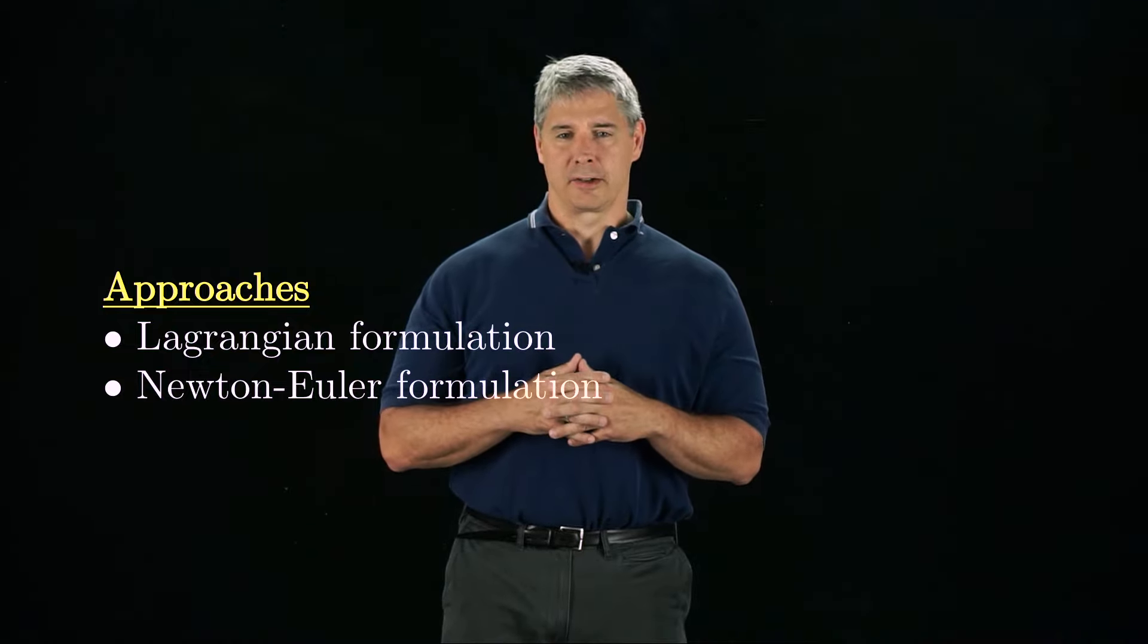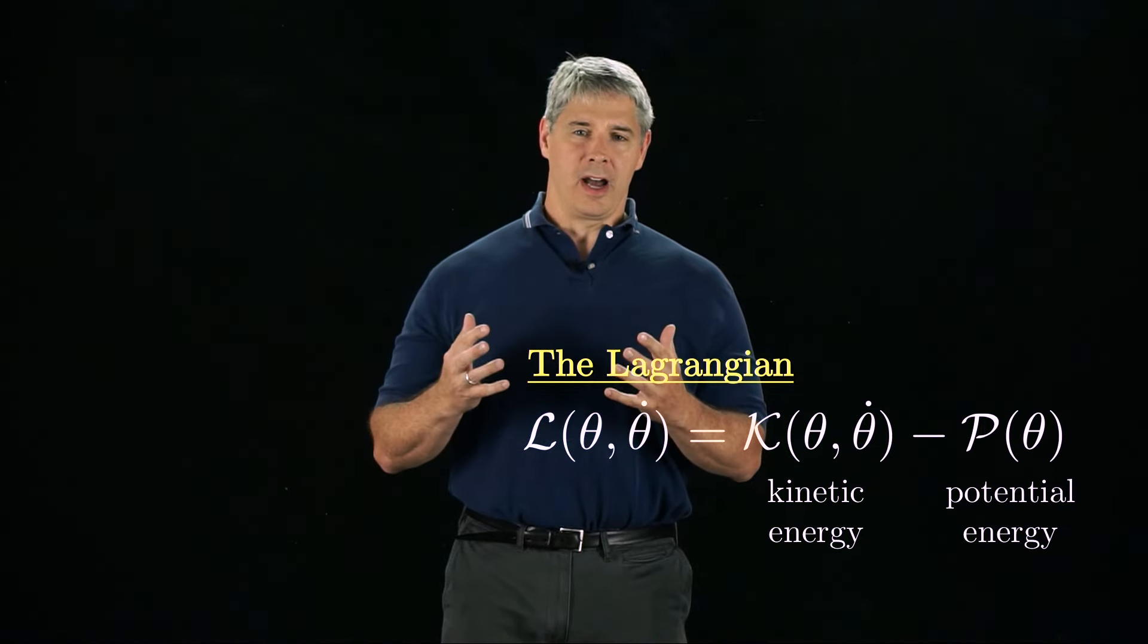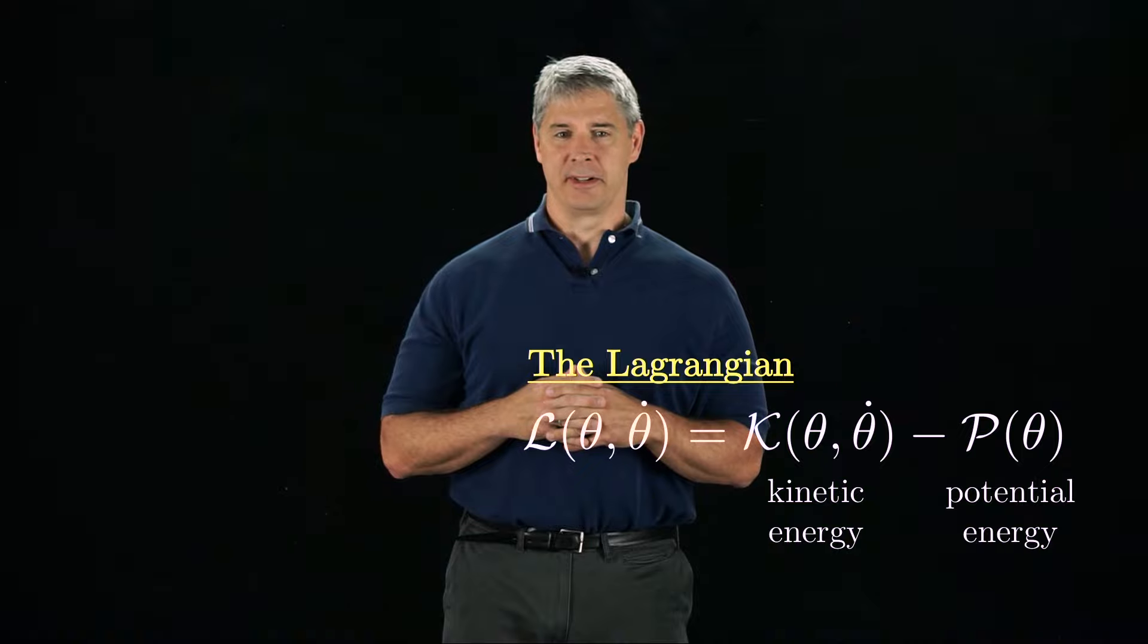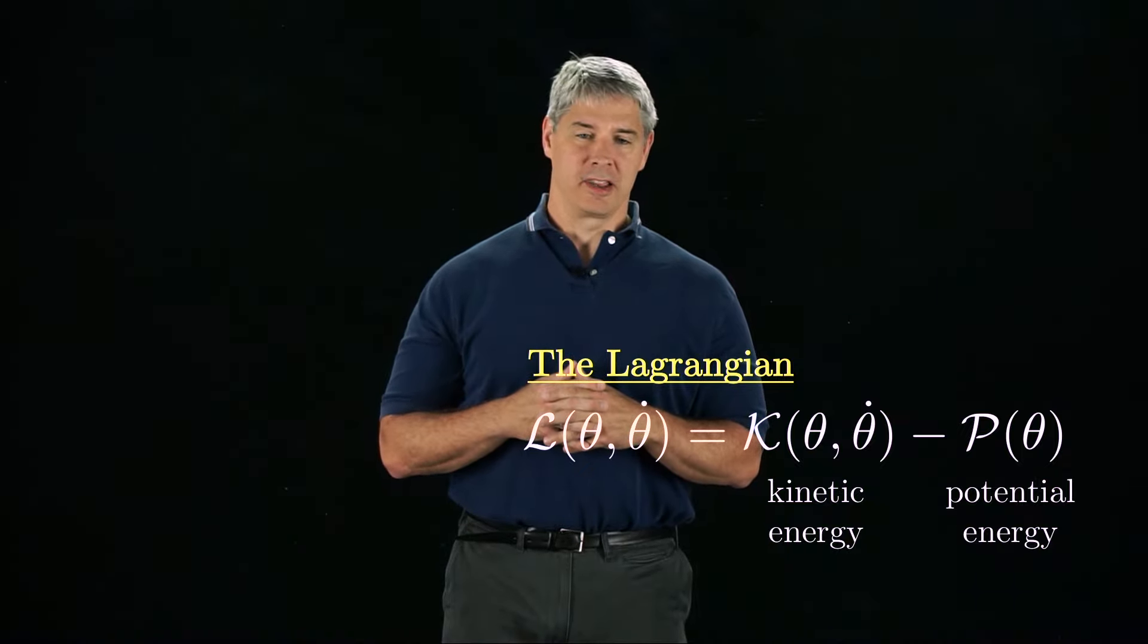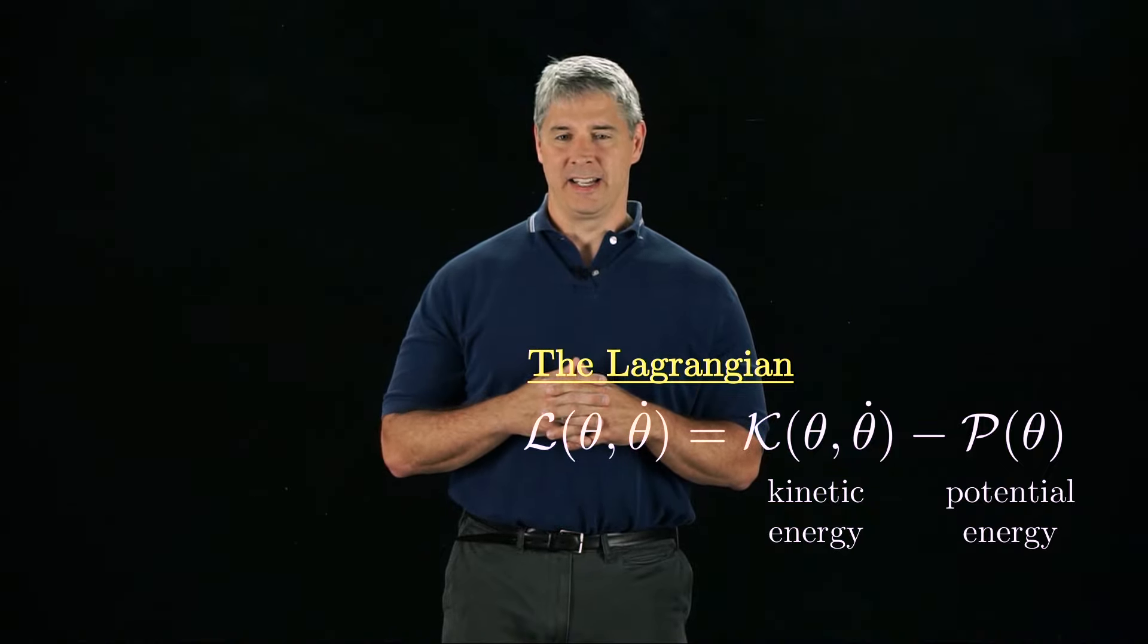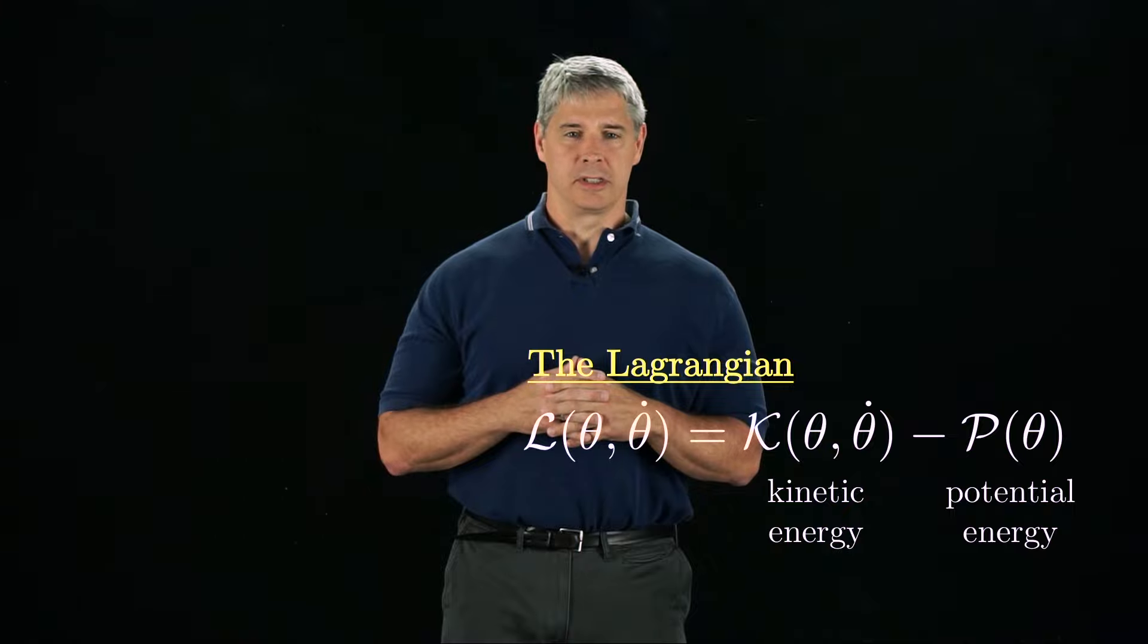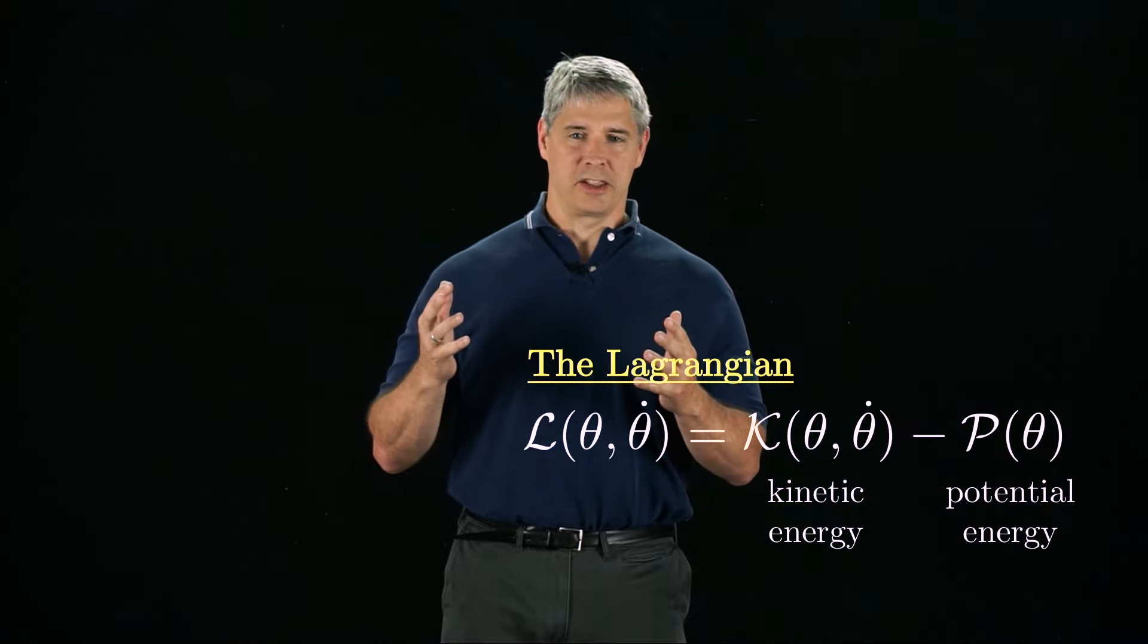The key object in the Lagrangian formulation is the Lagrangian, L. The Lagrangian for a mechanical system is its kinetic energy minus its potential energy. The potential energy P depends only on the configuration θ, while the kinetic energy K depends on θ and θ̇. I won't derive the Lagrangian equations of motion, which you can find in many textbooks on mechanics. I'll just state the result.